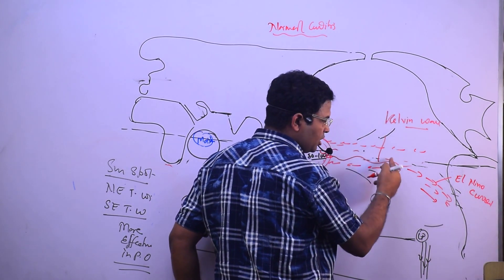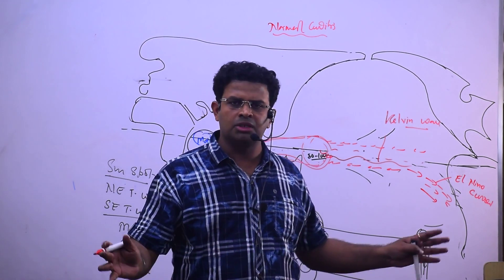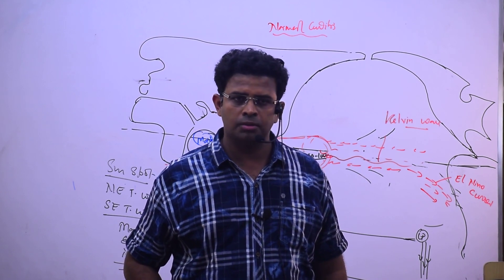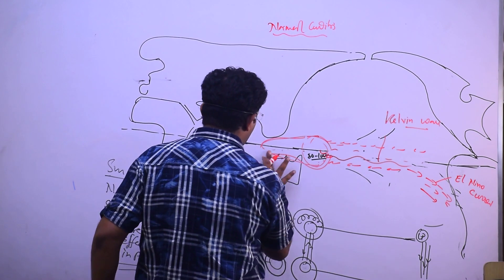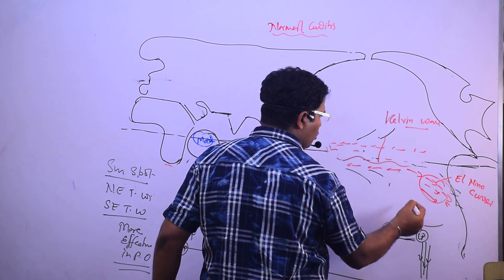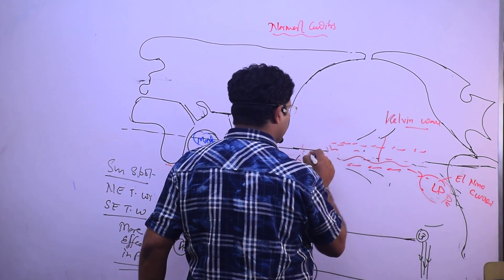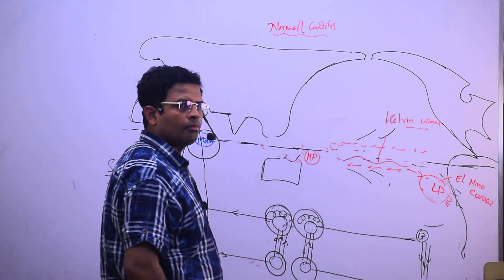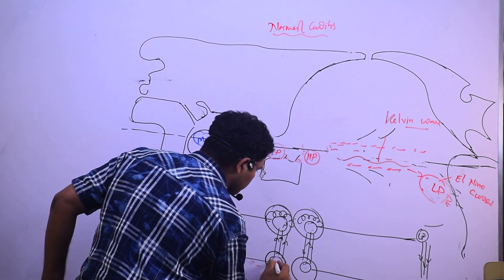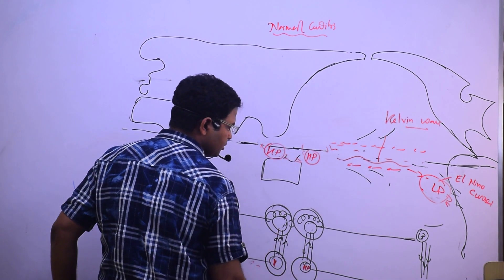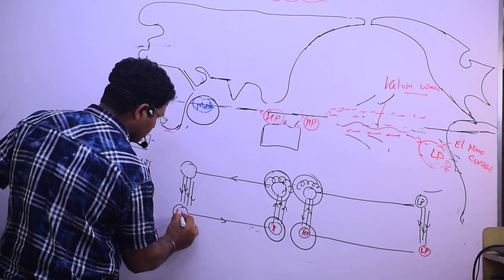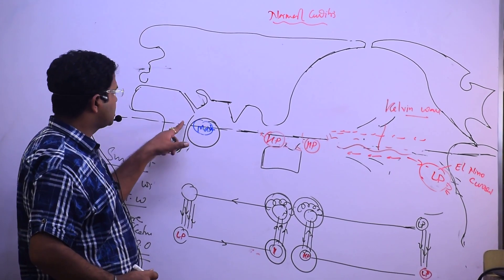The warm ocean current — the Kelvin wave — reaches the Peruvian coast and removes the colder Peruvian water. This is known as El Niño current. All the warm water from the western Pacific region moves away, making that region comparatively high pressure. The eastern Pacific near Peru becomes warm low pressure.